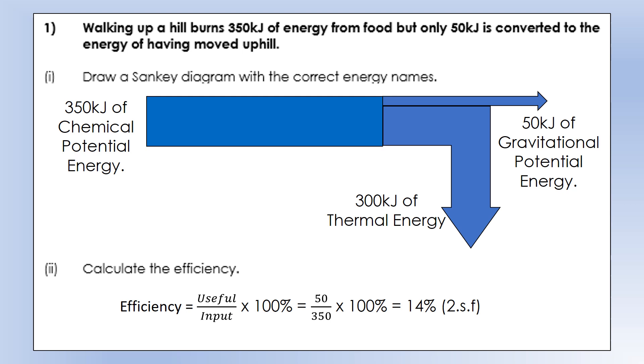Efficiency is the useful divided by the input. As long as they're in the same unit of energy, it doesn't matter what they are. These are both in kilojoules, so we can just put them straight in. We've got 50 kilojoules useful, 350 is the input, times it by 100, gives us 14% rounded to two significant figures.